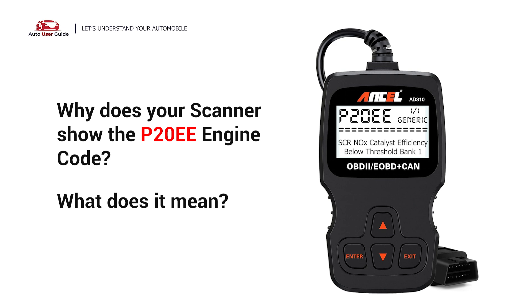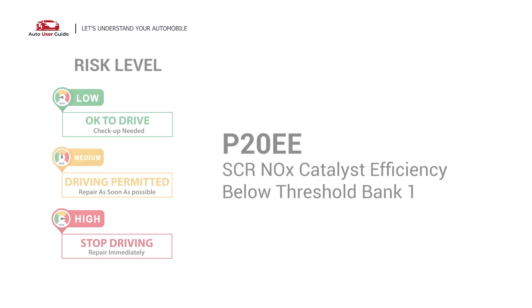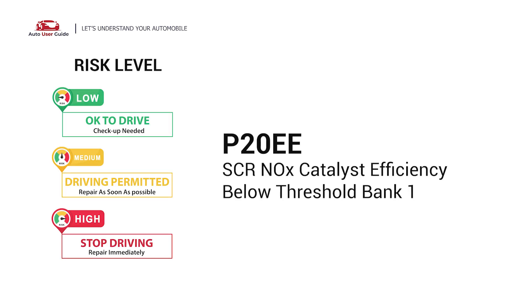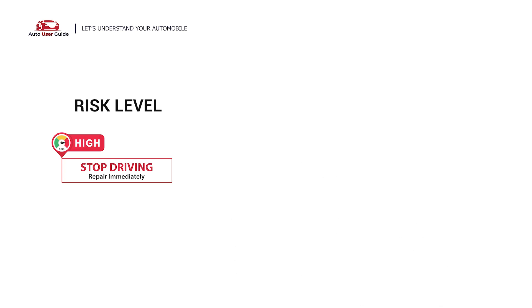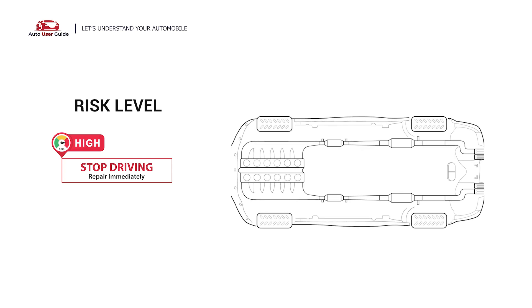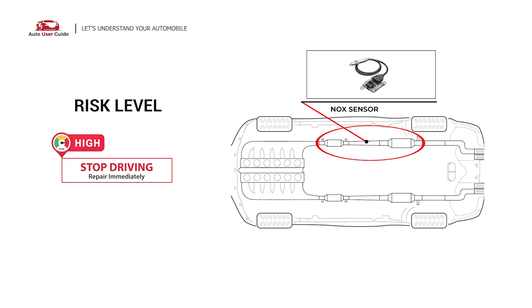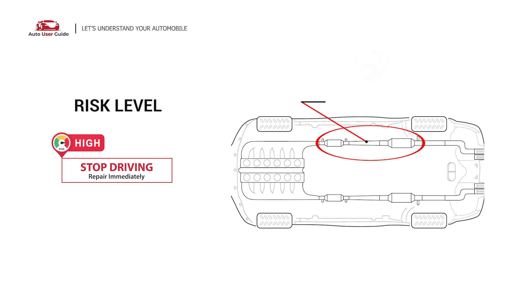Why does your scanner show the P20EE engine code and what does it mean? The P20EE stands for SCR NOx Catalyst Efficiency Below Threshold. This engine code indicates an issue with a vehicle's catalyst efficiency, specifically the Selective Catalytic Reduction system's ability to convert nitrogen oxide (NOx) to nitrogen and water.